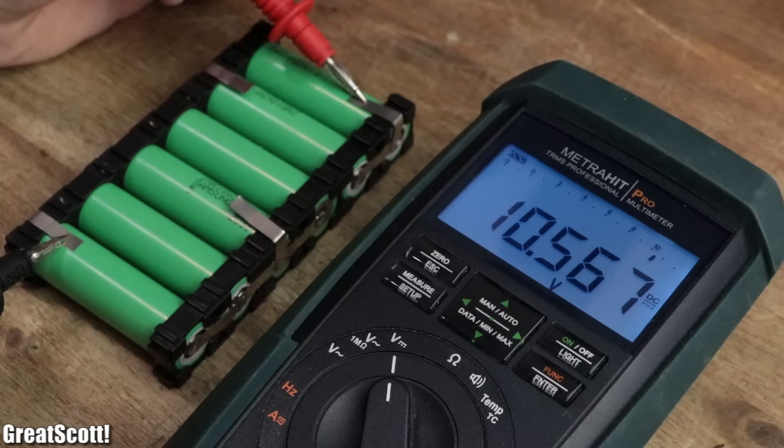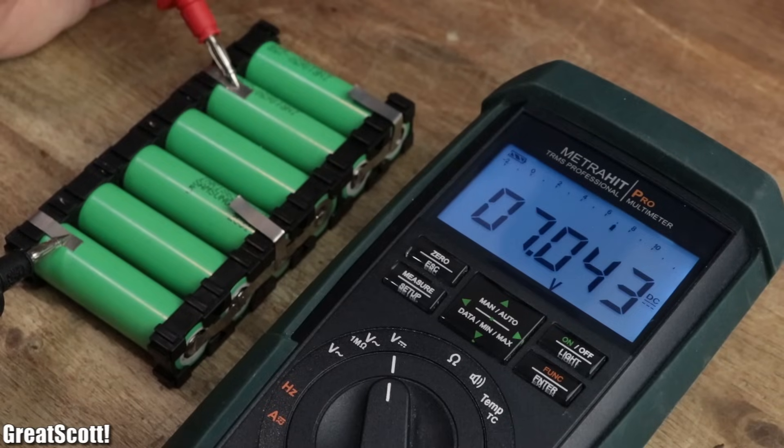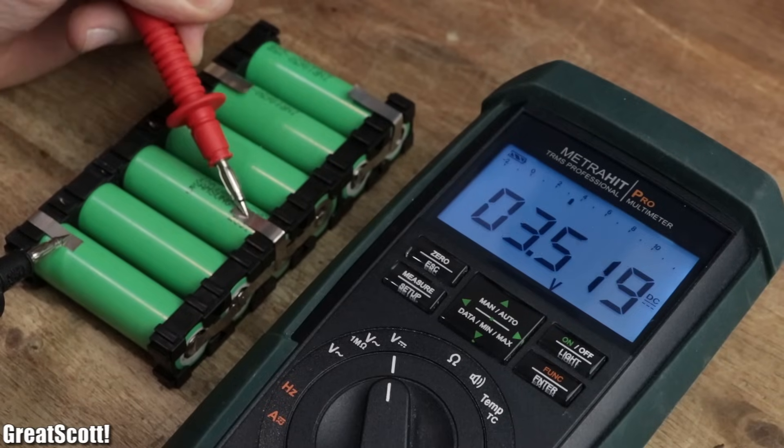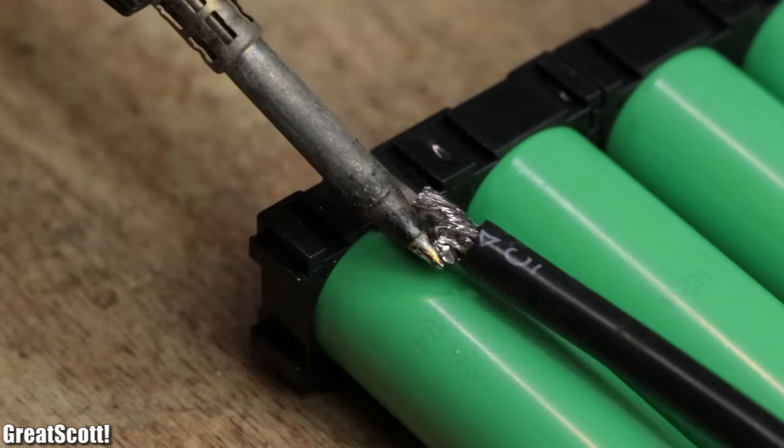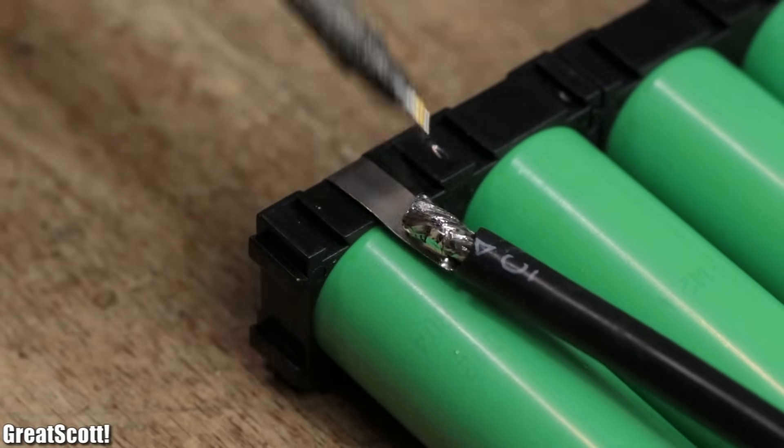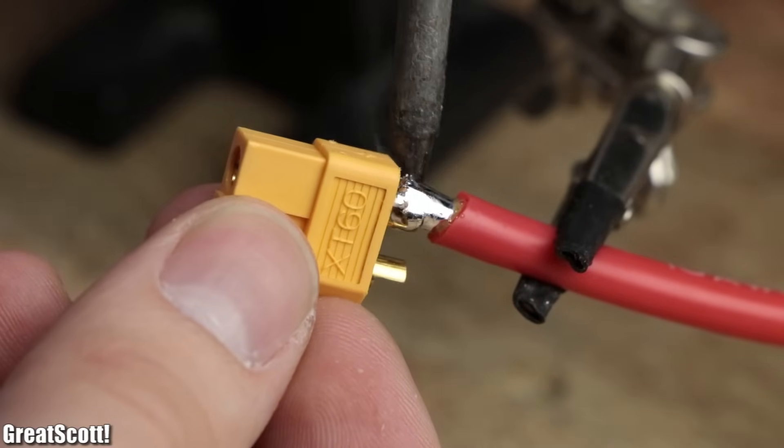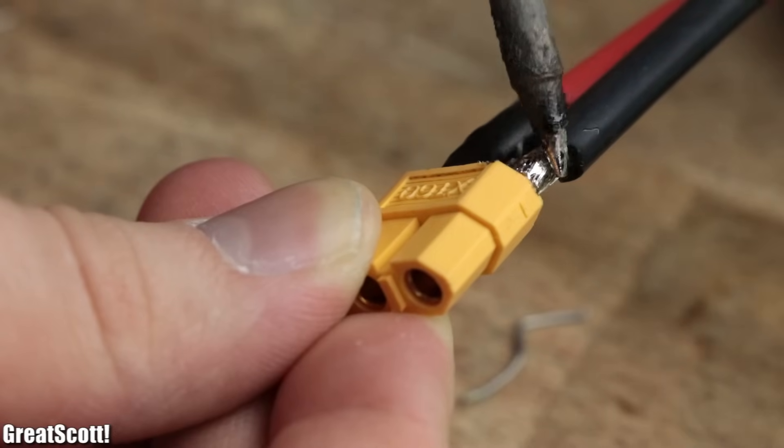After double-checking that all the voltages at the tabs made sense, the positive and negative tab received an unnecessarily thick 10 AWG cable that connects to XT60 connector to later supply the main current to the load.